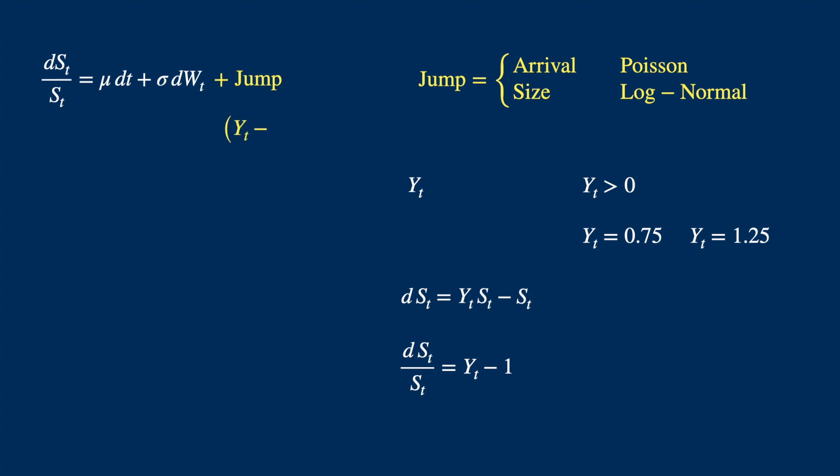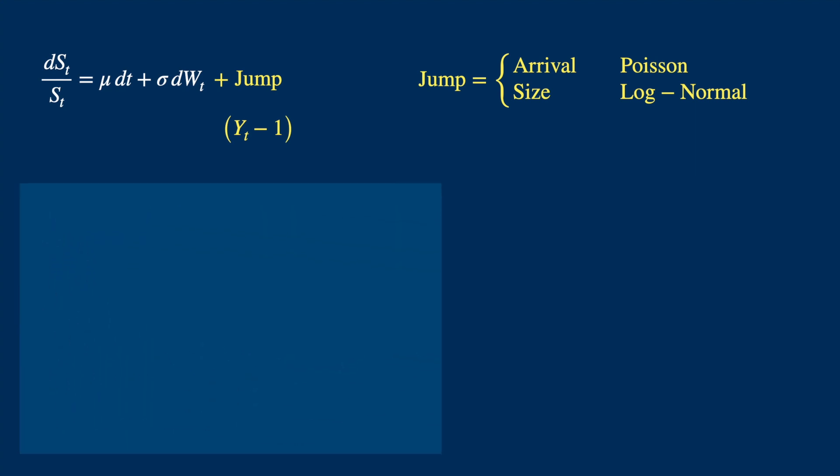So we can add it to the Black-Scholes dynamics. And let's move to the jump arrival, which as we said earlier, is assumed to follow a Poisson process. We have covered the Poisson process to death before. We saw one can define the Poisson process in several ways, but the definition in terms of the infinitesimal is more natural here. So let's reproduce the definition.